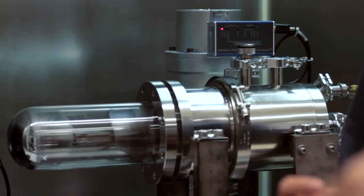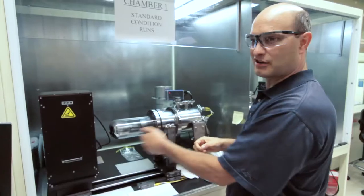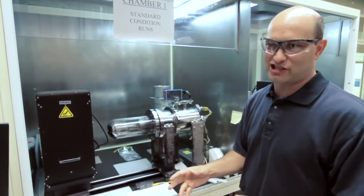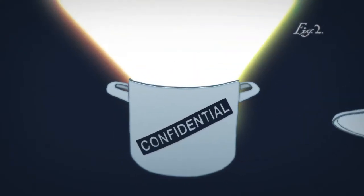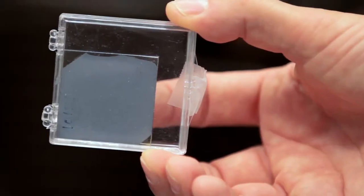After you put down the window layers, you have to put down the cadmium telluride. You simply place your sample on there, close it up, seal it, put the cover back on, and then the secret is in the recipe. This is the most important layer because this is what's converting your light into electrons.